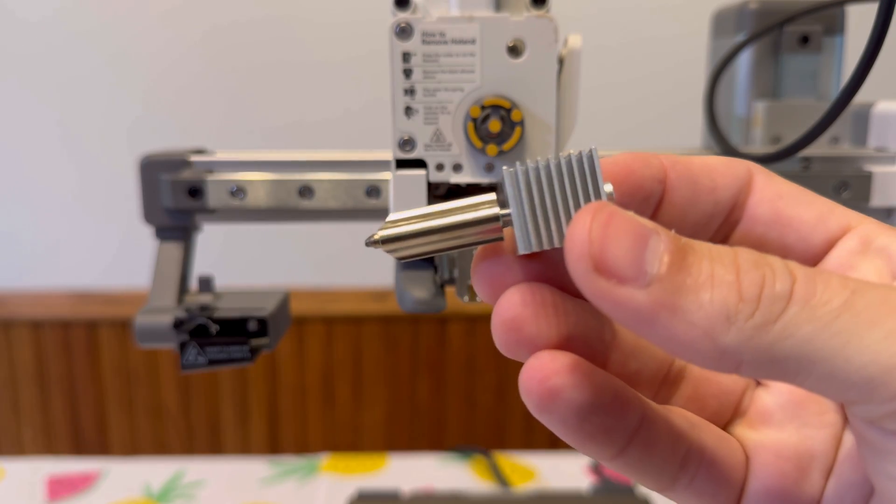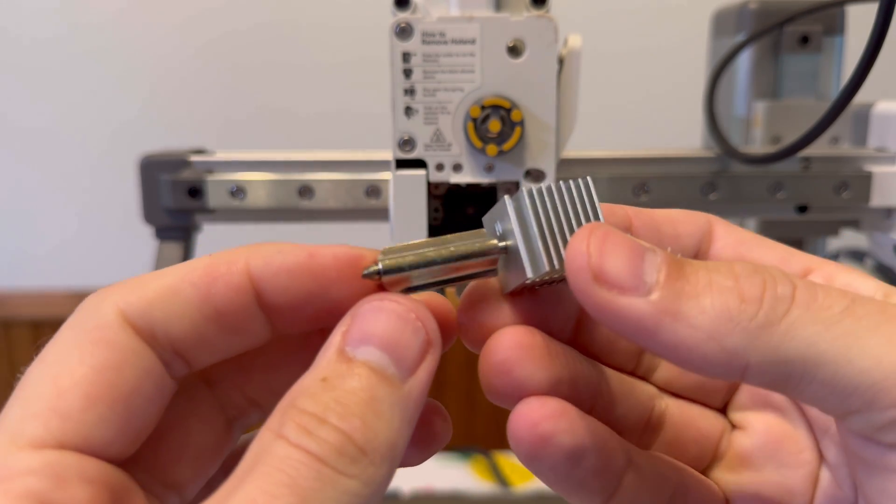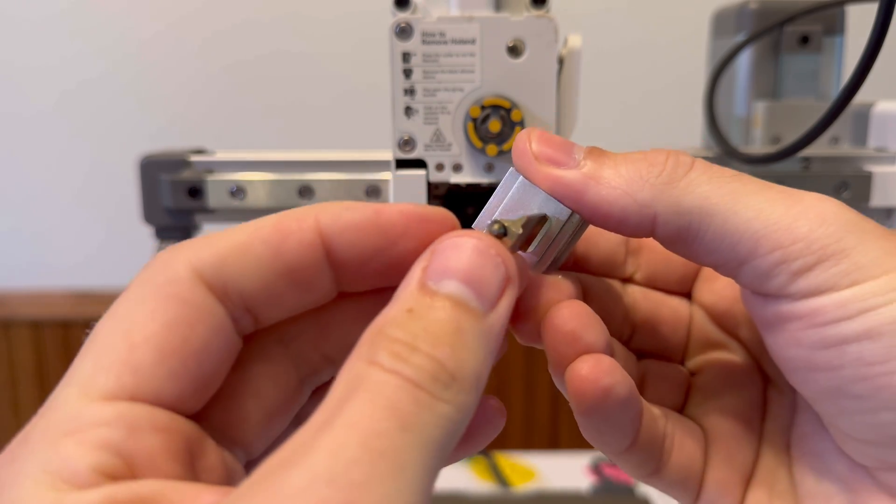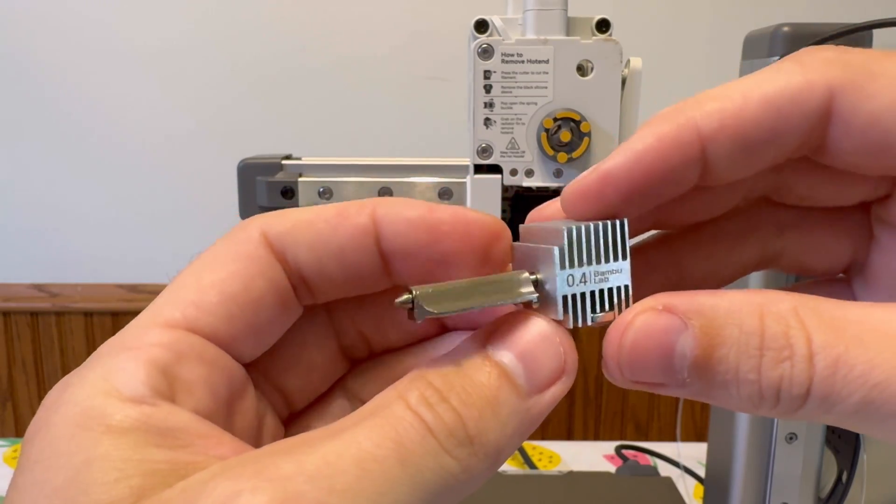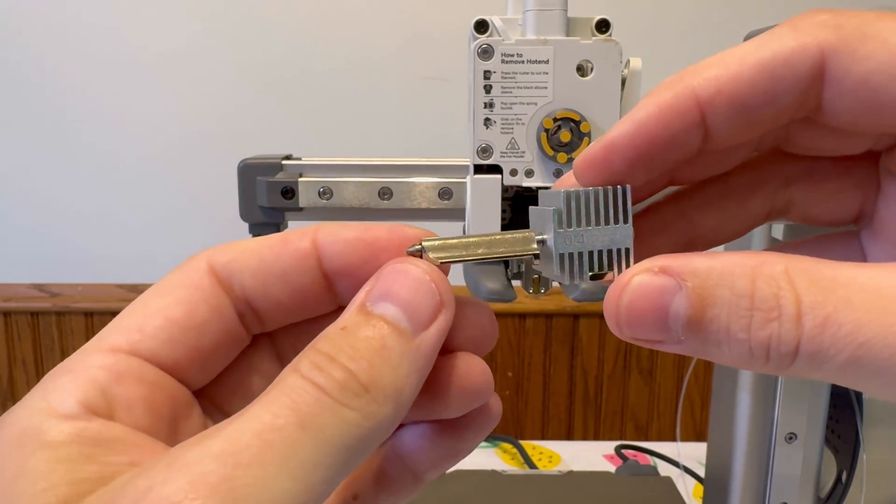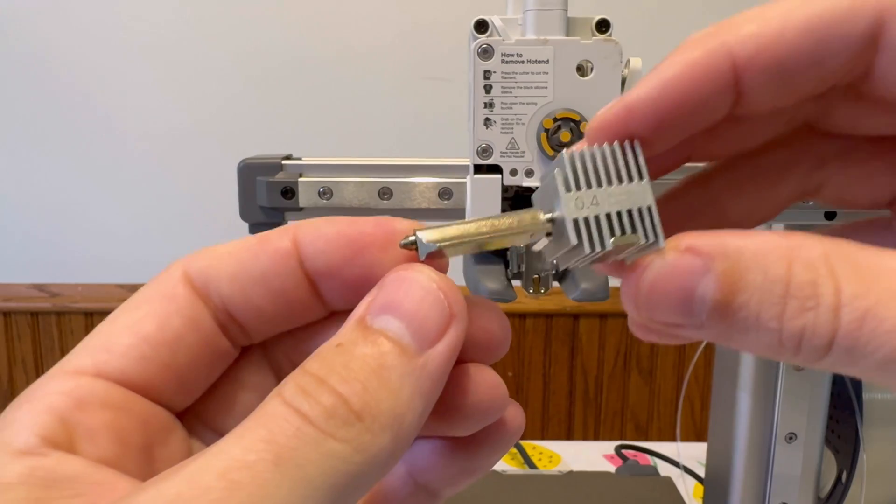Because most of the time when this printer clogs it's because the nozzle has something weird going on with the tip of it. If I'm being honest with you I would just buy a new nozzle. Like if you're having a lot of issues with like clogging and such just get on Bamboo Lab's website and purchase them. I even buy them on Amazon.